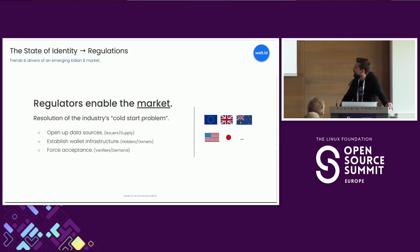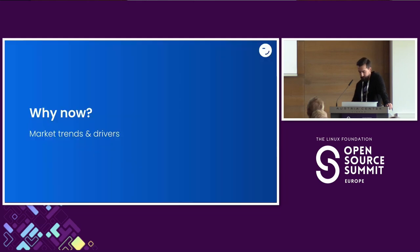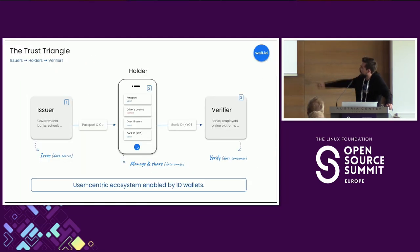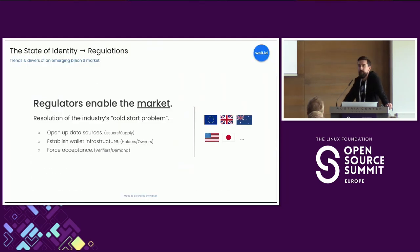Regulations and regulators are enabling the market by resolving the cold start problem. In case some of you don't know what the cold start problem is, it refers to the problem that if we have a marketplace, we need the supply side and the demand side. Decentralized identity is basically a three-sided marketplace. How can we get issuers to actually issue digital credentials into a wallet so it can be verified? There's not that much value for issuers themselves. What regulations are doing is they open up these data sources by, in certain cases, requiring issuers — highly trusted issuers like governments — to issue digital credentials to wallets.